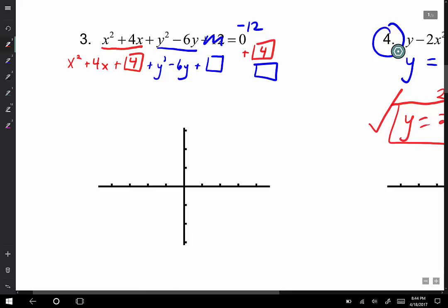We have 6 and we halve it to get 3, then square it to get 9. So our new number, -12 + 4 + 9, is going to be 1. The blue is going to turn into (y - 3)² and the red is going to turn into (x + 2)².